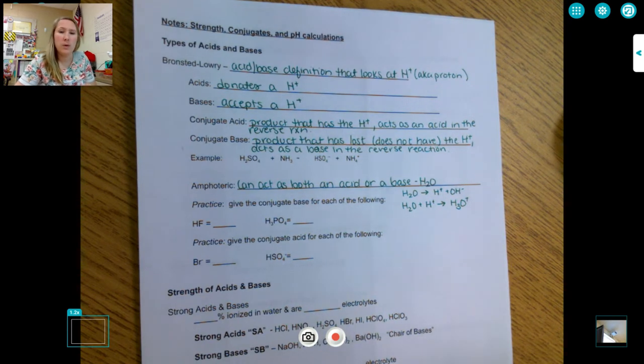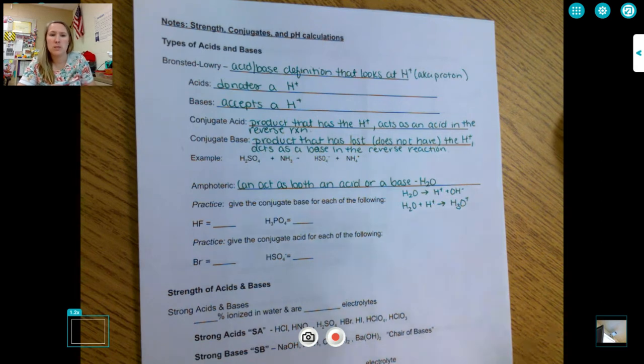So a quick intro to acids and bases. In AP Chem, we focus mostly on Bronsted-Lowry acids and bases, and the Bronsted-Lowry definition of an acid and base has to do with where the acidic hydrogen or proton is located.